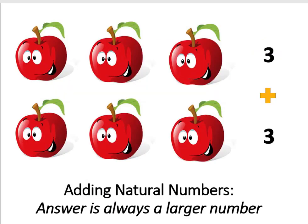Adding natural numbers makes sense. If you had three apples and you added three more apples, you would end up with more apples than you started with. You could count the total number of apples, and that would be the answer to adding those natural numbers. So the number sense here is the underlying idea that adding two natural numbers together will always result in a larger answer.